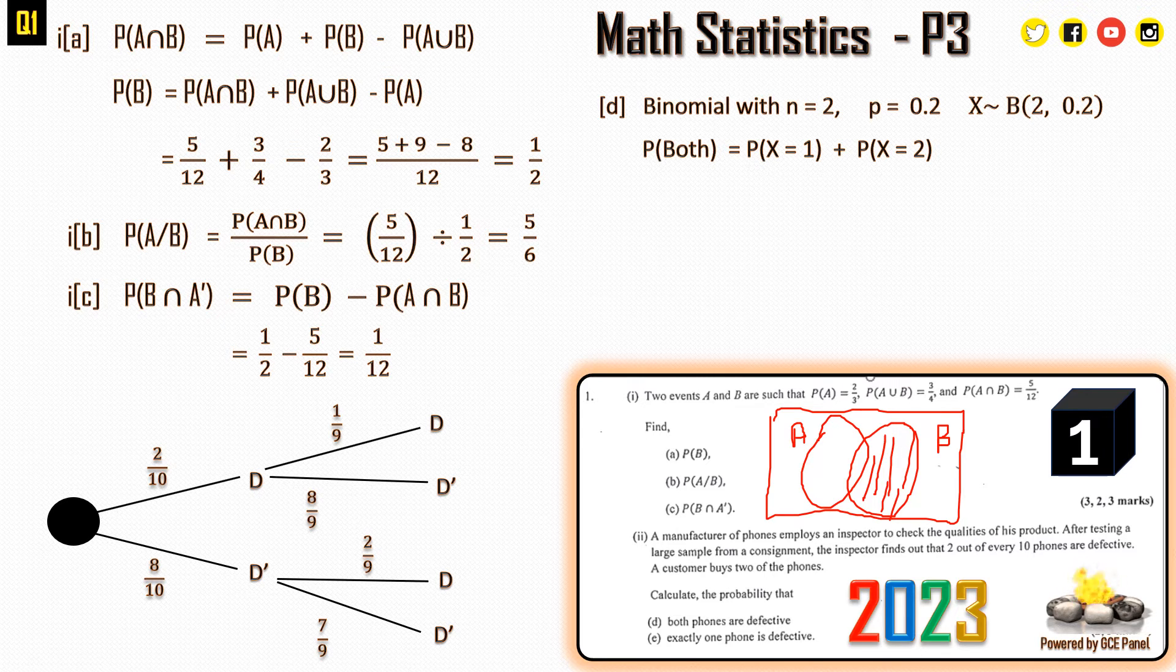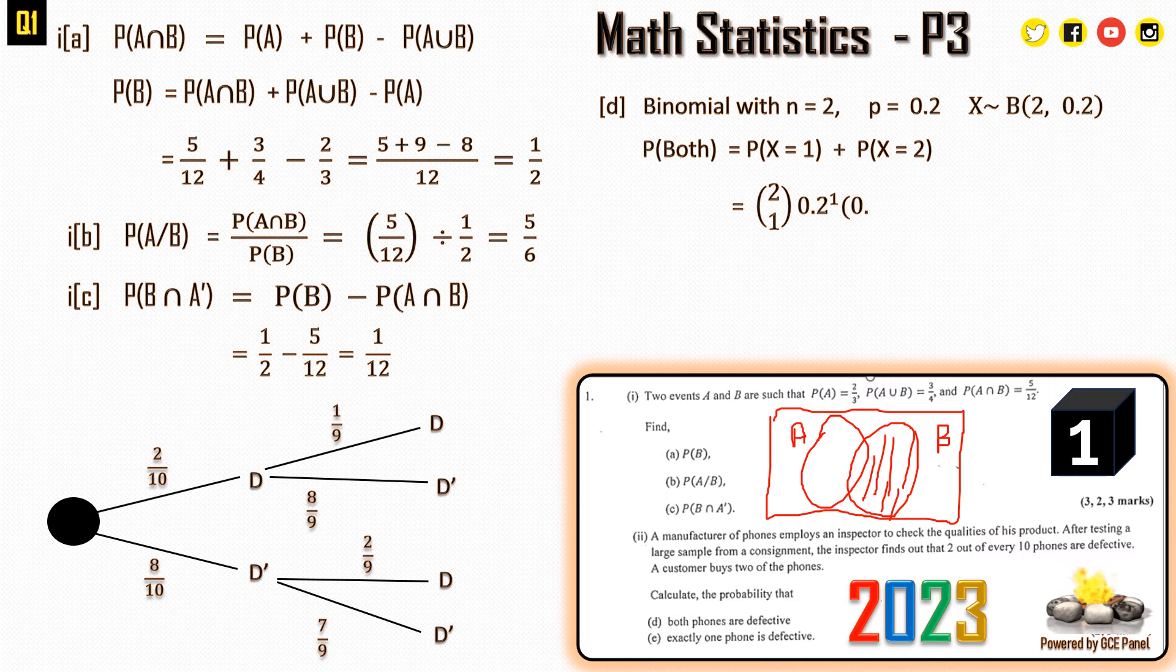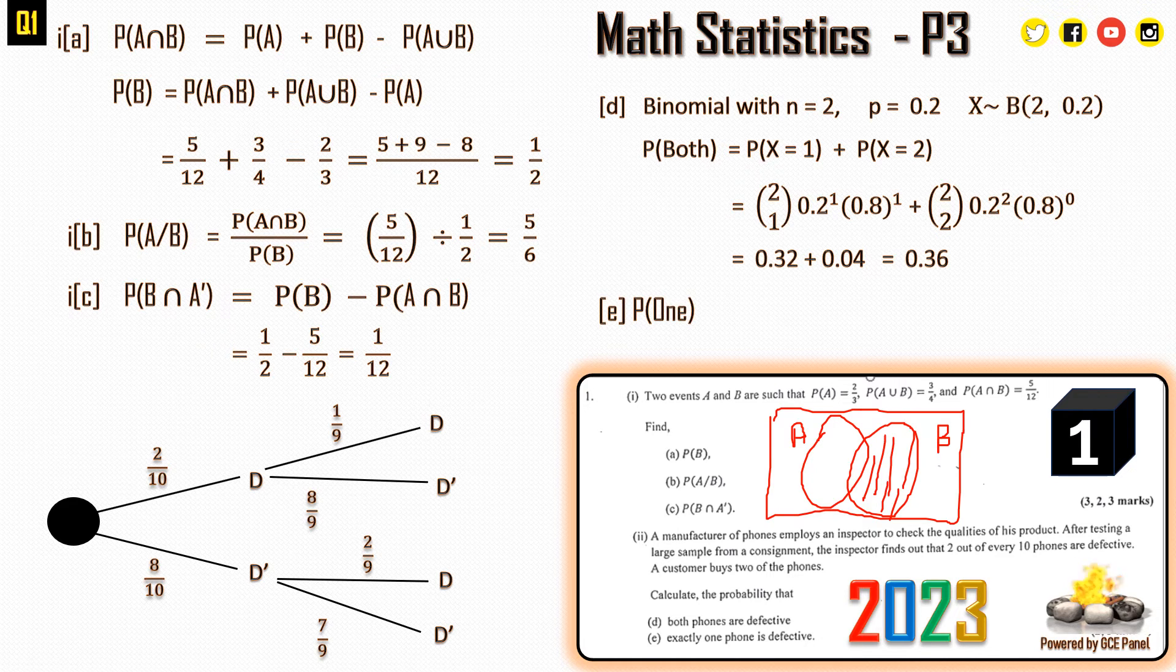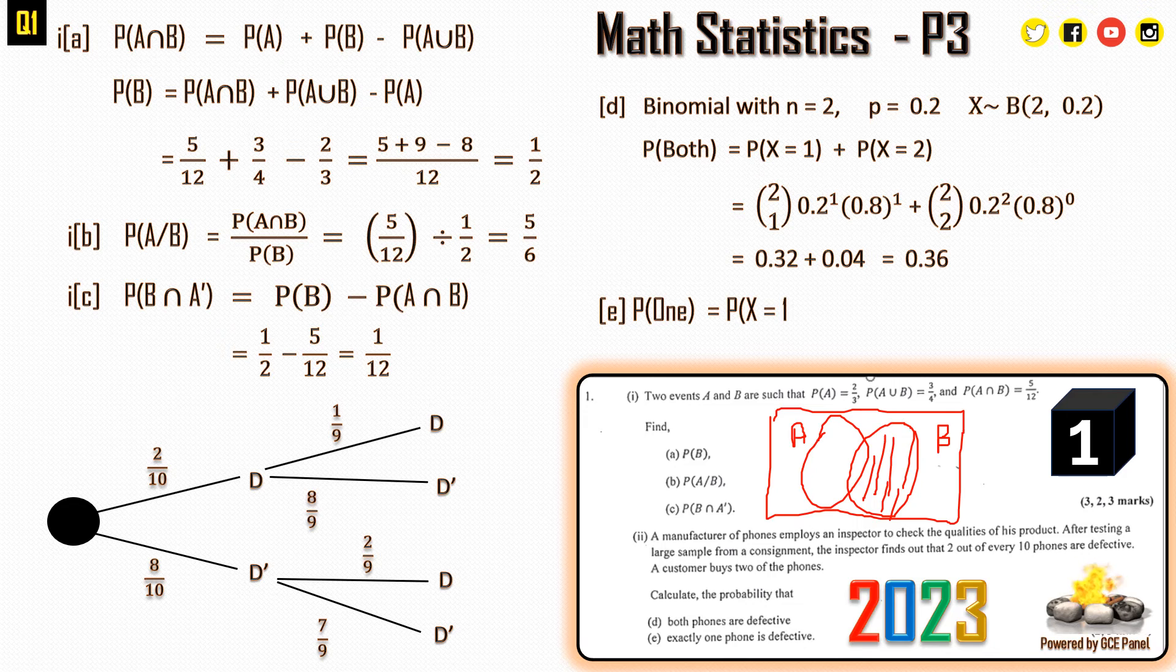For both phones being defective, it means the first defective and the second is defective. So this is going to give us probability of X equals 1 plus probability of X equals 2. That's selecting 1 from 2, 0.2 to the power 1, 0.8 to the power 1, plus selecting 2 from 2, probability of defective 0.2 to the power 2, and not defective 0.8 to the power 0. When we simplify this, we are going to have 0.36.